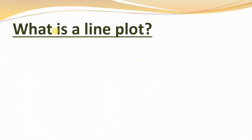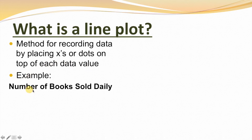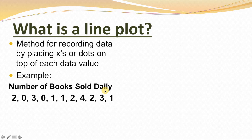So what exactly is a line plot? A line plot is a method for recording data by placing x's or dots on top of each data value. For example, let's say that we have data on the number of books sold daily. On one day, two books were sold. On another day, zero books were sold. Then the next day, three books were sold. And so on.